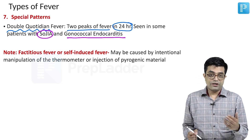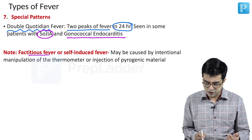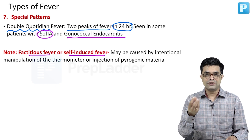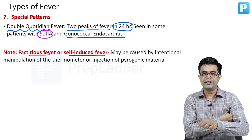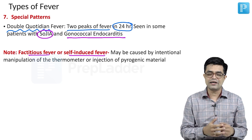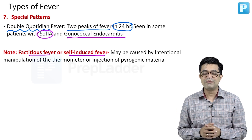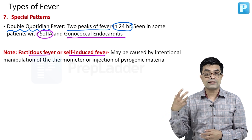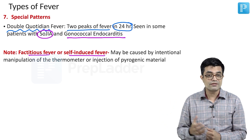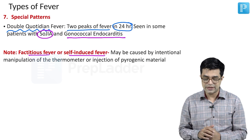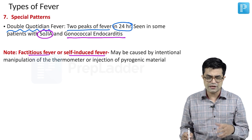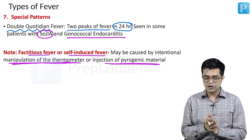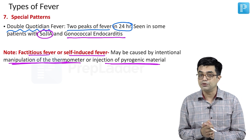Then there is a variety which is actually not a true fever — factitious fever or self-induced fever. You may have seen in movies where they put an onion or lemon with salt under their arm to produce fever. All these tricks, external substances, toxins used by persons themselves to produce fever are called factitious fever. They are sometimes caused by manipulation of the thermometer or by injection of pyrogenic material.